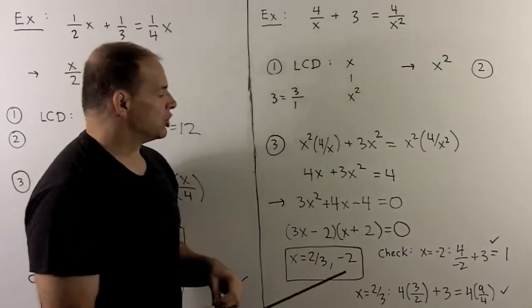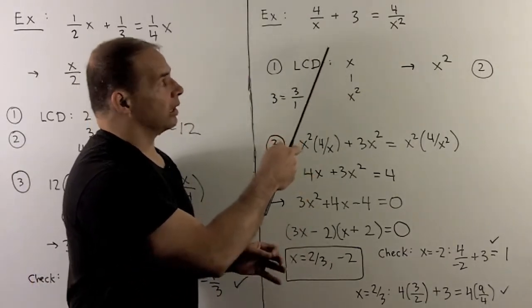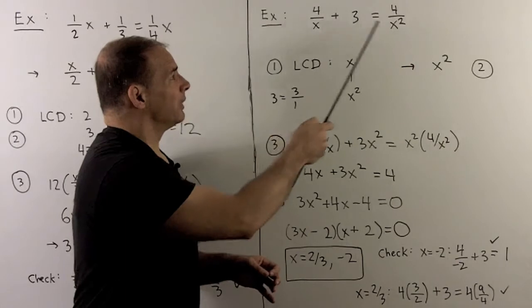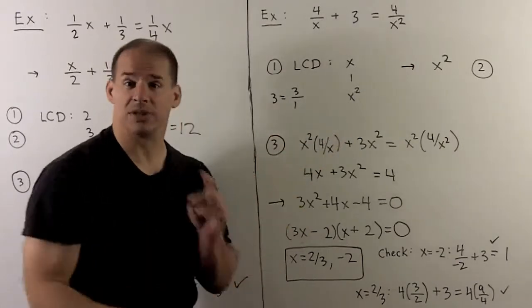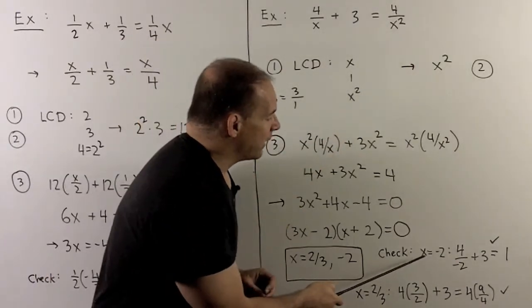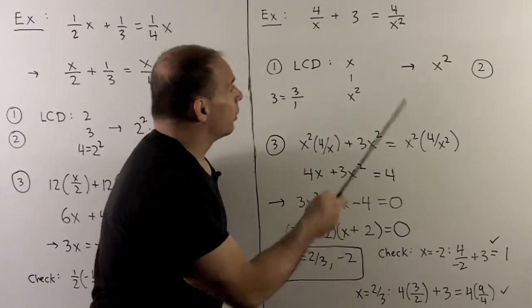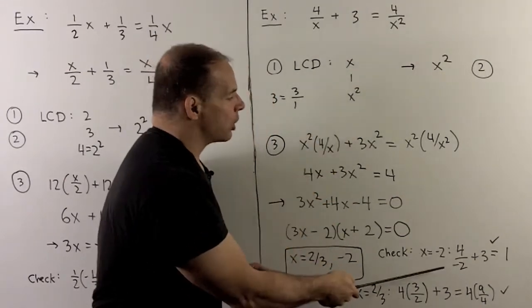I go back to checking the original equation. Note the only way we'll get division by zero is if we actually have x equal to zero, so it's not going to be a problem. When I check with x equal to minus 2, we're going to have 1 on each side, so that works out.